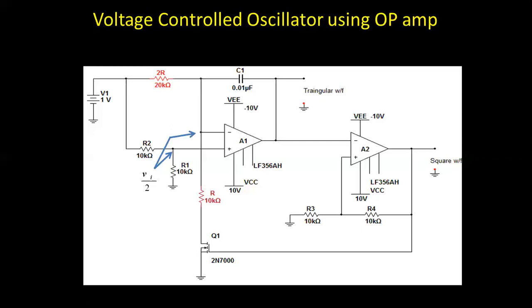A linear circuit means we have applied negative feedback to this particular circuit. The Schmitt trigger is a non-linear circuit where positive feedback is applied. In the integrator with negative feedback, the virtual short concept is applied: the non-inverting terminal is at Vi/2, so the inverting terminal is also at Vi/2.